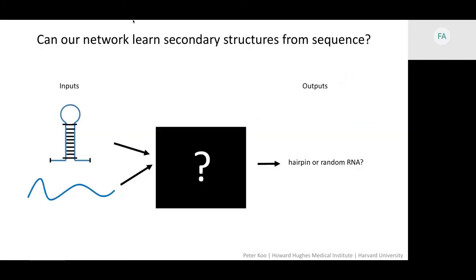So we wanted to test whether our network can actually learn secondary structures from sequence. So we generated a synthetic dataset with random RNA sequences and RNA sequences with a hairpin loop. And we just had the same ResidualBind network predict whether that sequence has a hairpin or not. And it performs really well.